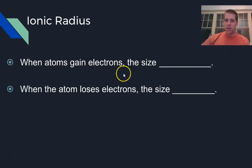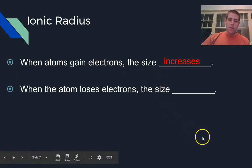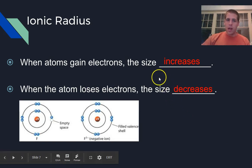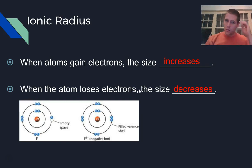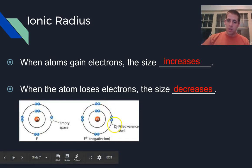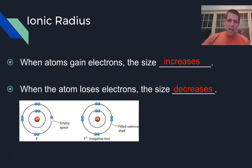Generally speaking, when atoms gain electrons, their size should increase. When they lose electrons, the size should decrease. This is obviously true if we're changing energy levels — a sodium atom that loses its one valence electron no longer fills that outside shell, so its size decreases. But this is also true when energy levels stay consistent. For fluorine gaining an electron, it actually increases the size of the atom slightly, because adding one electron increases the electron-electron repulsion going on from one level to another. The pull of the nucleus is spread out across more electrons, so either way, the size is still increasing.